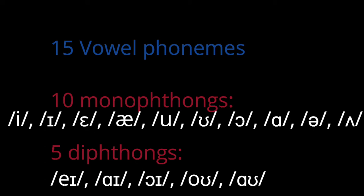And there are five diphthongs: eɪ, aɪ, ɔɪ, oʊ, aʊ.